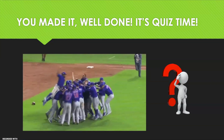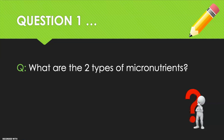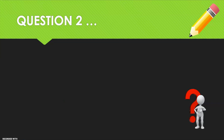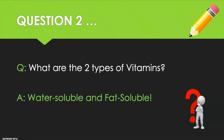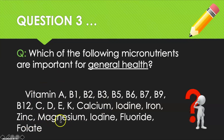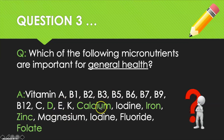Well done, you made it — now it's quiz time! Question one: What are the two types of micronutrients? Answer: vitamins and minerals. Question two: What are the two types of vitamins? Answer: water-soluble and fat-soluble. Question three: write down the vitamins and minerals listed, then highlight or circle the ones most important for general health. The answers are: Vitamin D, calcium, iron, zinc, and folate. These are the most important for general health — the others are still important, but not as much.